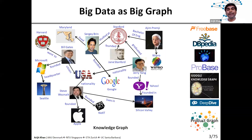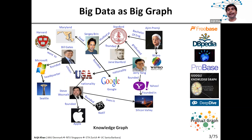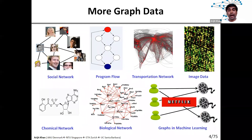Today we are in the era of big data, and big data can often be modeled as big graphs because of the inherent connections present among various entities in the data set. For example, we can think of data as knowledge graphs such as Freebase, DBpedia, Microsoft's Probase, and Google's own Google Knowledge Graph. Amazon introduced the Amazon co-purchase network, and these days most companies have their own knowledge graphs. Outside knowledge graphs, we also find graph-structured data in social networks, chemical compound structures, and program flow analysis.